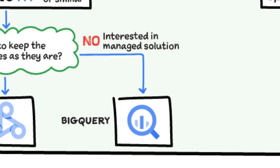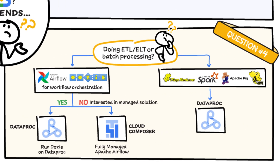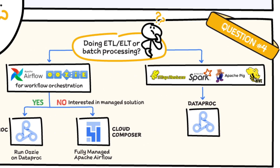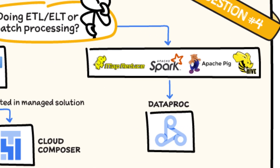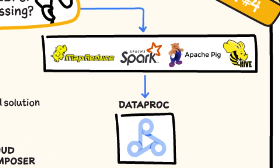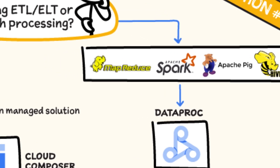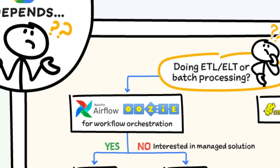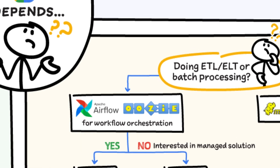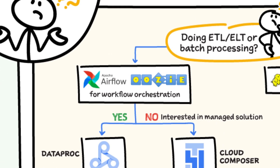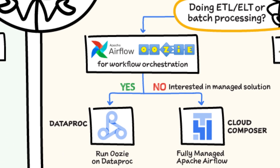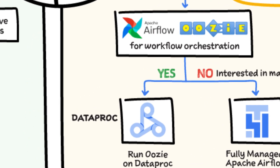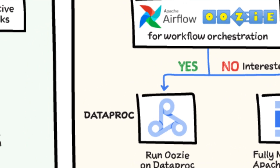Now the fourth question: are you doing ETL or batch processing? Use Dataproc if you're doing that using MapReduce, Pig, Spark, or Hive. But if you're using workflow orchestration tools such as Apache Airflow or Oozie, and want to keep the jobs as they are, then again Dataproc is great.